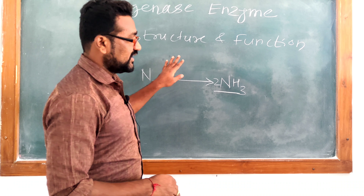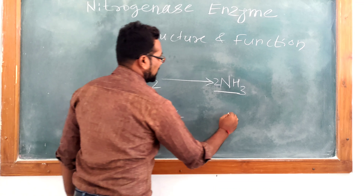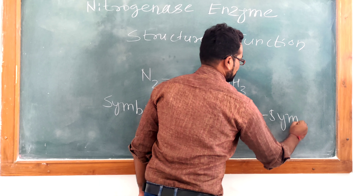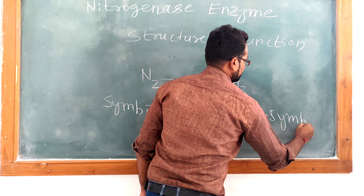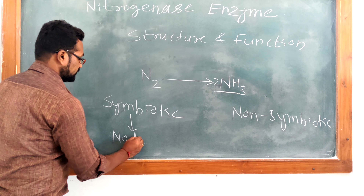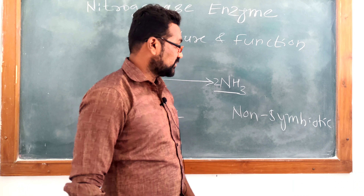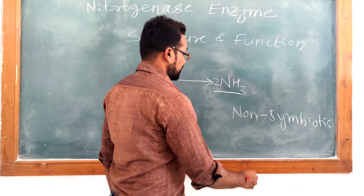First of all, it is essential to know where this enzyme occurs. This enzyme occurs in both symbiotic as well as non-symbiotic bacteria. The symbiotic bacteria show this enzyme's presence in root nodules, whereas non-symbiotic bacteria show the presence of the enzyme in heterocysts. There are also some non-symbiotic bacteria that do not contain any heterocyst, where they show special temporal specification for nitrogen fixation. Nitrogenase enzyme is present in both these types of bacteria.